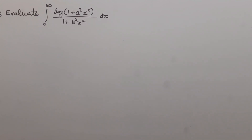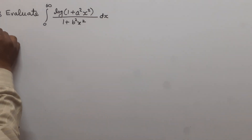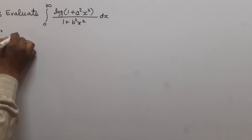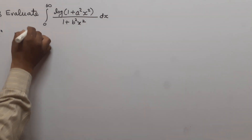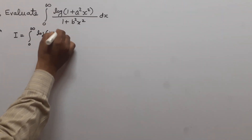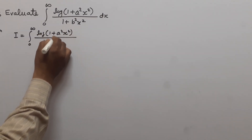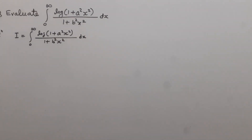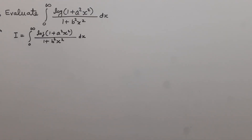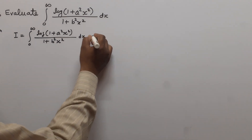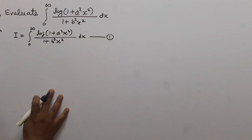Students, now we solve the integral log(1 + a²x²) divided by (1 + b²x²) between the limits 0 to infinity. First we suppose that this integral is equal to I. So, log(1 + a²x²) divided by (1 + b²x²) dx between the limits 0 to infinity is equal to I. Suppose that this is equation 1.